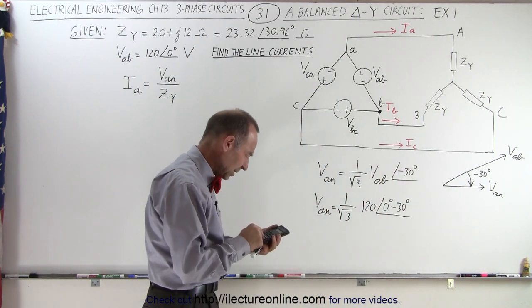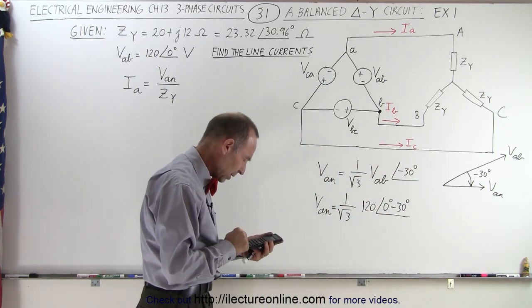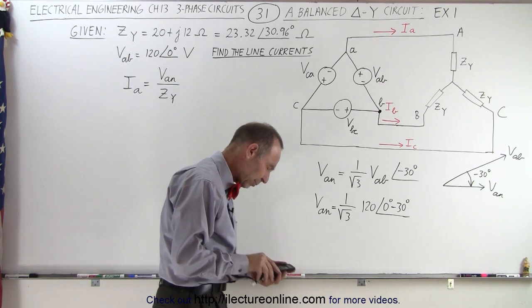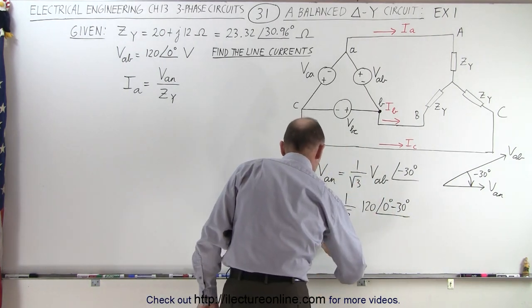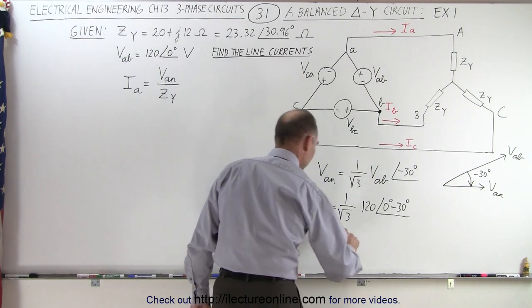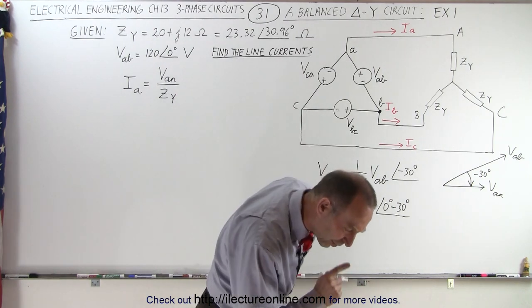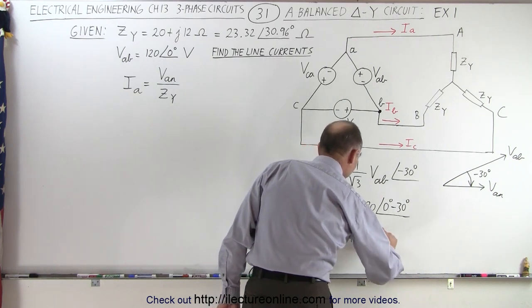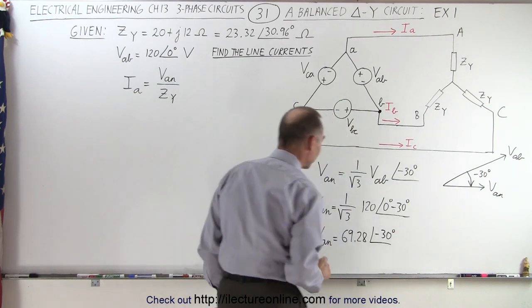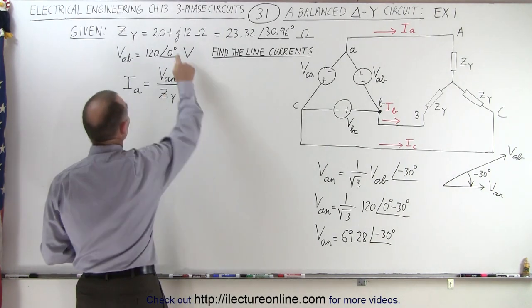So 120 divided by the square root of 3, we get 69.28. So we have Van, the equivalent phase voltage of 69.28 with a phase angle of minus 30 degrees.